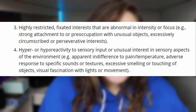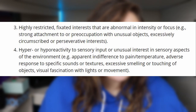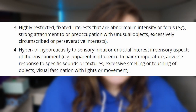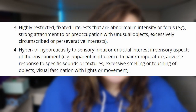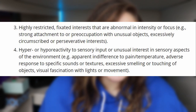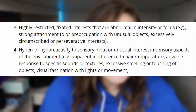Number three: highly restricted, fixated interests that are abnormal in intensity or focus, for example, strong attachment to or preoccupation with unusual objects, or excessively circumscribed or perseverative interests. And number four: hyper or hypo reactivity to sensory input, or unusual interest in sensory aspects of the environment. For example, apparent indifference to pain or temperature, adverse response to specific sounds or textures, excessive smelling or touching of objects, or visual fascination with lights or movement.